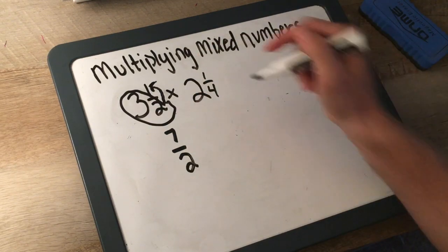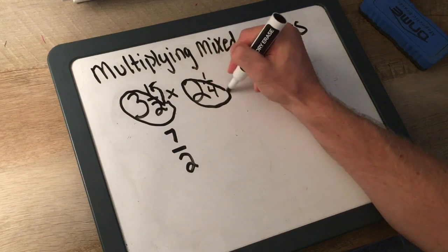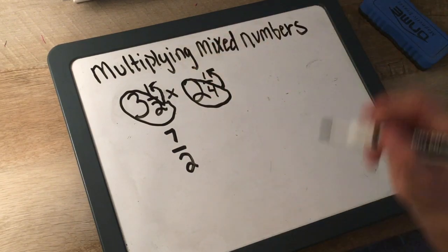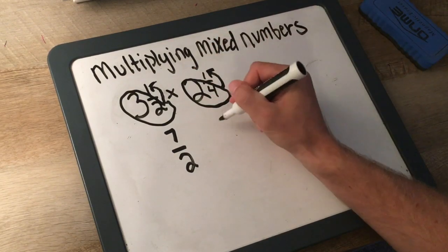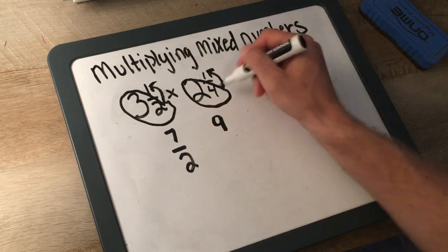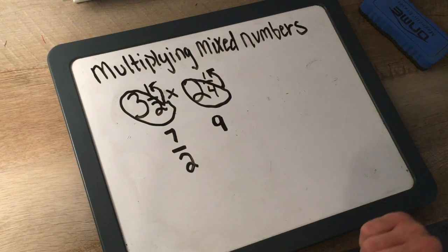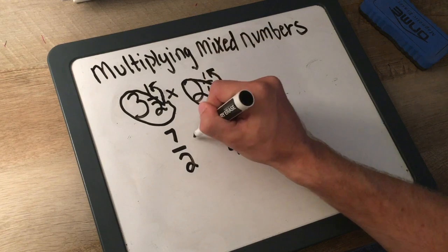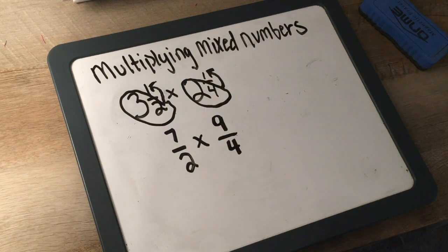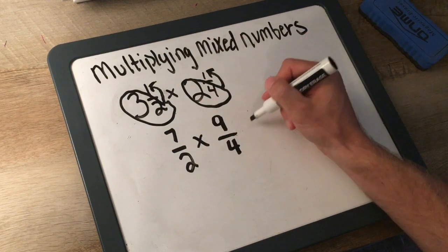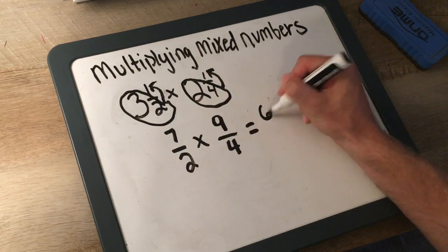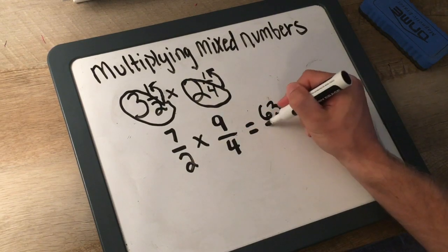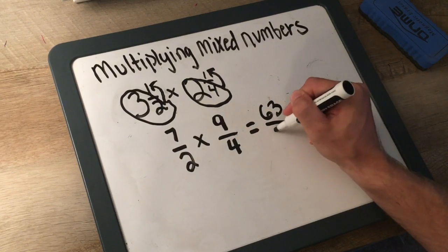We do the same thing on the other side. 2 times 4 is 8. Add it to the top: 8 plus 1 is 9. Keep the same denominator. And then now we are going to multiply straight across. 7 times 9 is 63. 2 times 4 is 8.